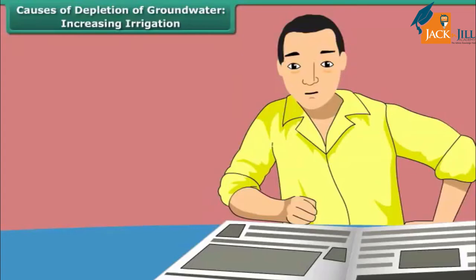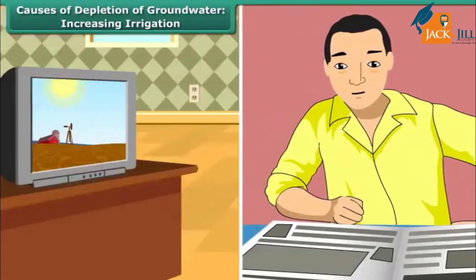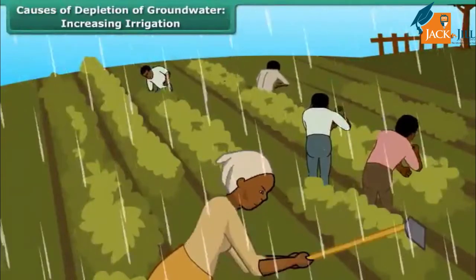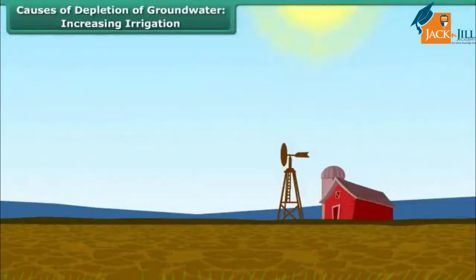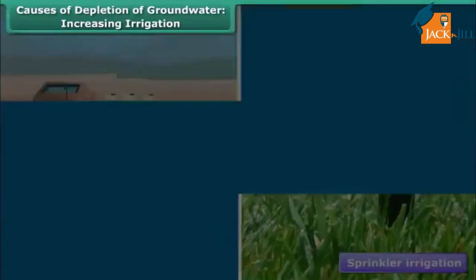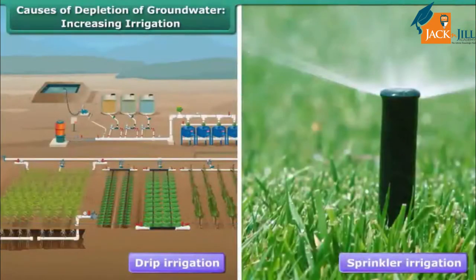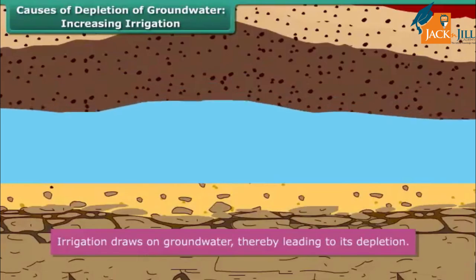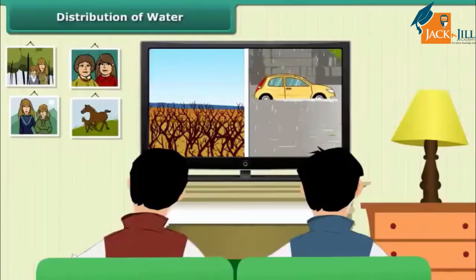You must have read in newspapers and seen on TV the hardship that a failed crop causes to a farmer. In India, even today, a large number of farmers depend on rains to water their fields. Crops fail when rainfall is scanty. Hence, there is a greater emphasis on irrigation. Irrigation systems like drip irrigation, sprinkler irrigation, etc. are promoted to ensure regular water supply to crops whether there is rain or no rain. Irrigation draws on groundwater, thereby leading to its depletion.